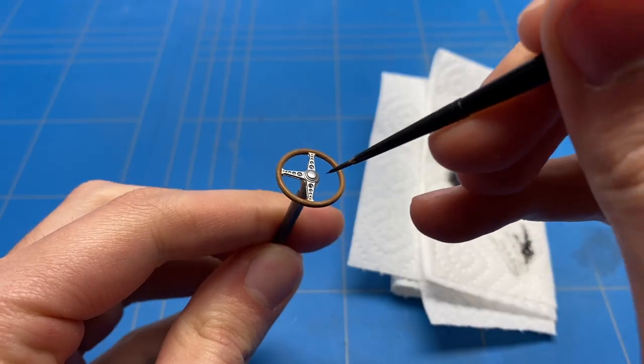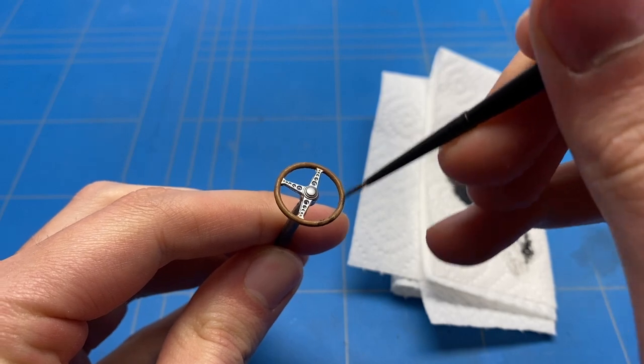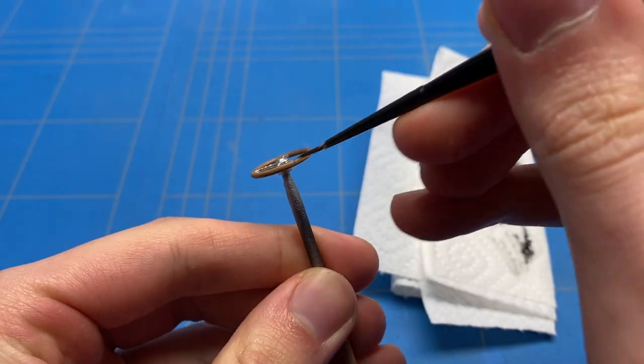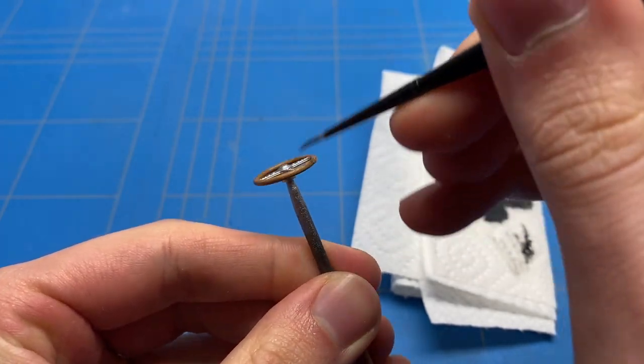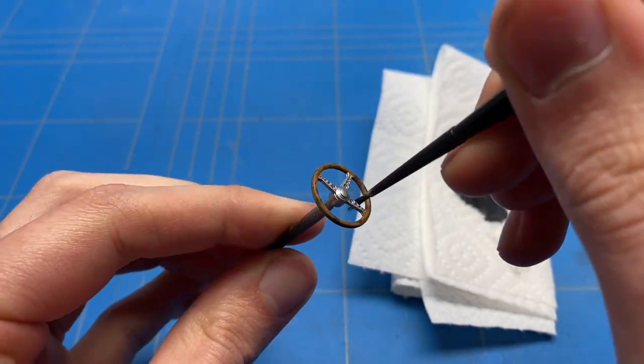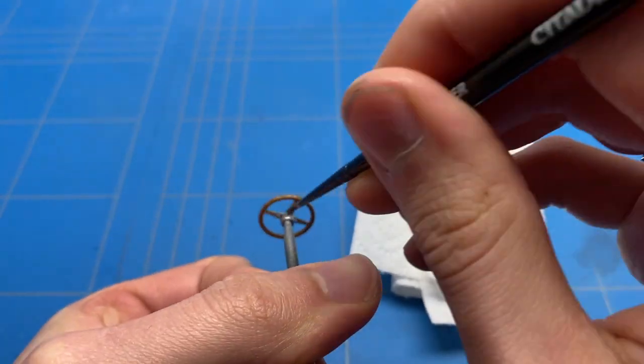I'm going to be applying the black to a paper towel, adding a lot of thinner to it to make it extremely thin and also a bit transparent, then wiping most of that black off the brush again just like I did with the brown tones, and then randomly applying it to the steering wheel.